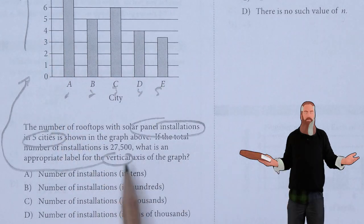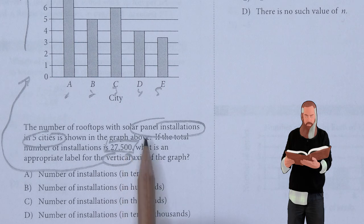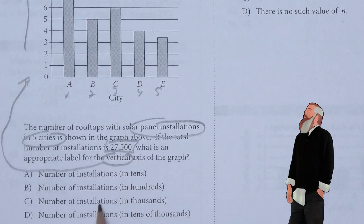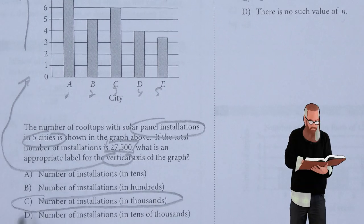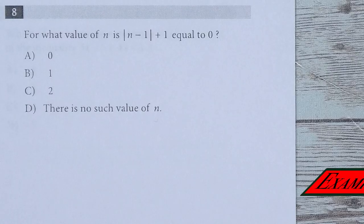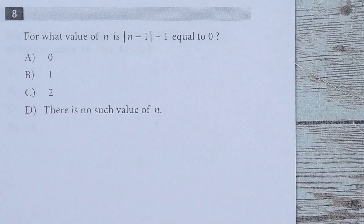Since these are single digits and we're talking about 27.5 thousands, we're looking at the number of installations in the thousands. So C is the answer.